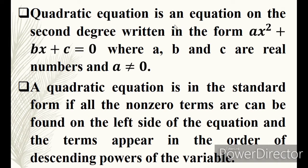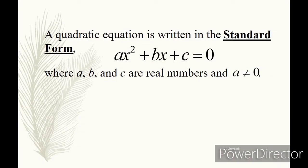What do we mean by quadratic equation? It is an equation on the second degree written in the form ax squared plus bx plus c equals 0, where a, b, and c are all real numbers, and a is not equal to 0. A quadratic equation is in standard form if all the non-zero terms are found on the left side of the equation and the terms appear in descending powers of the variable.